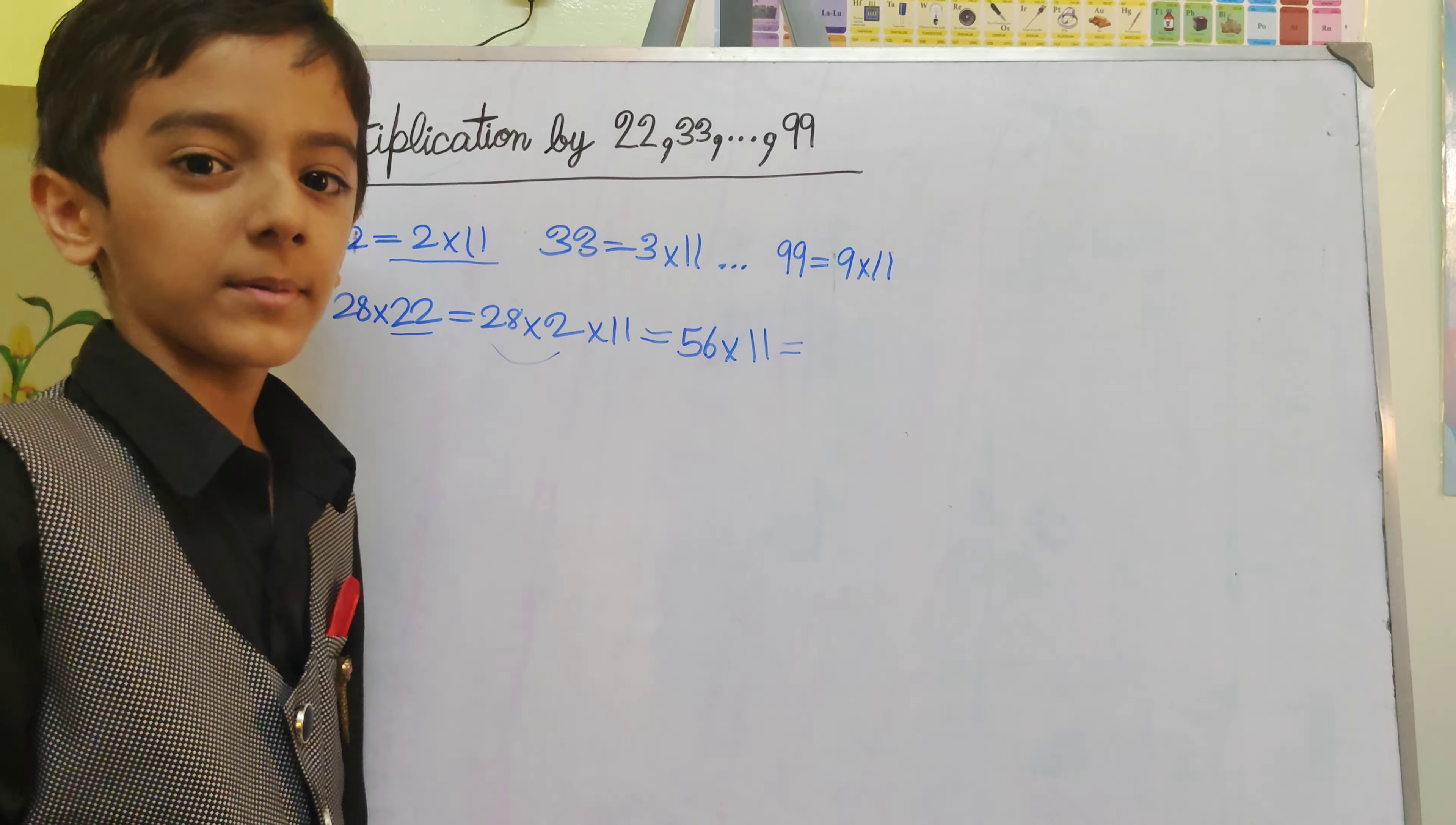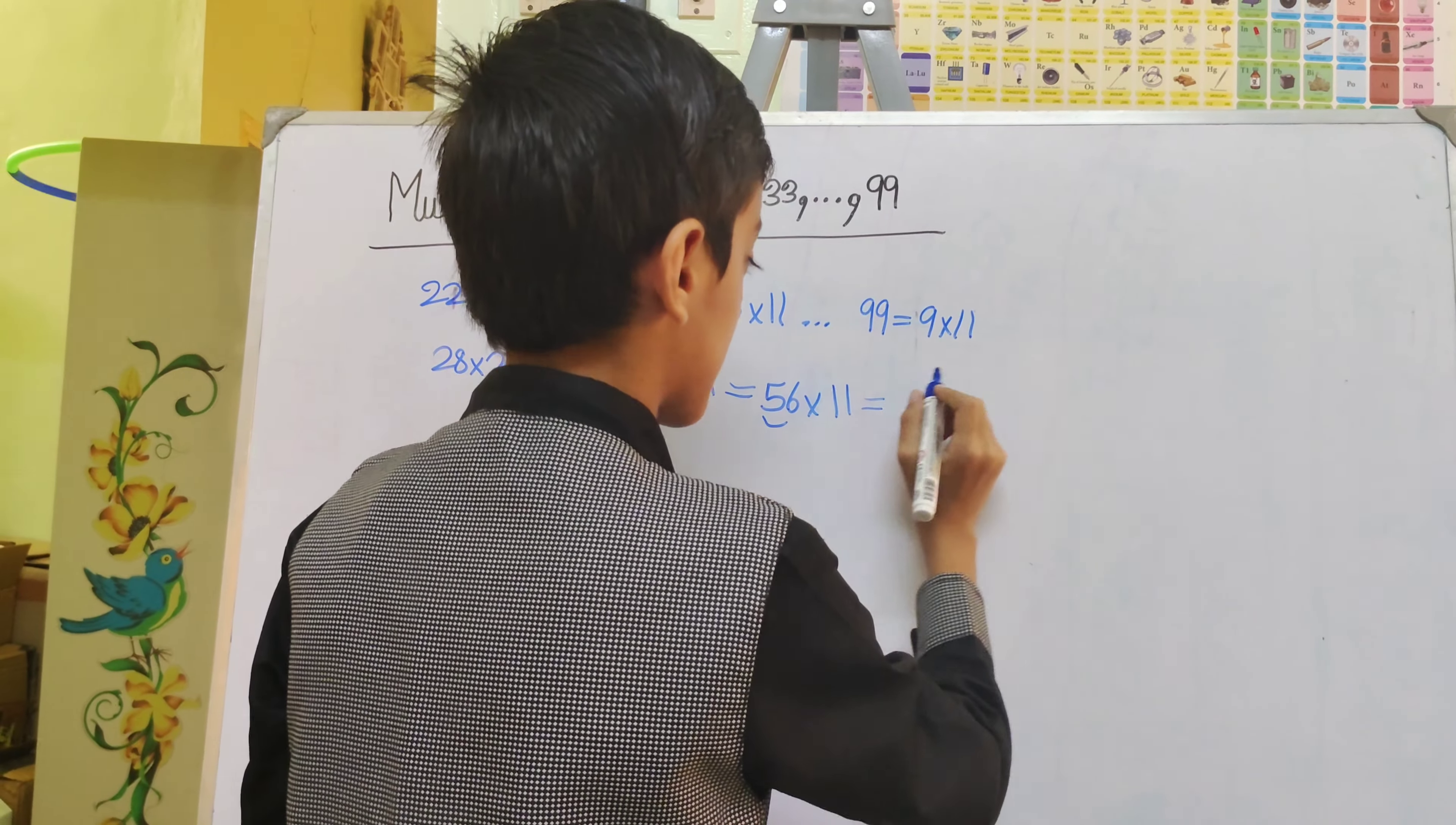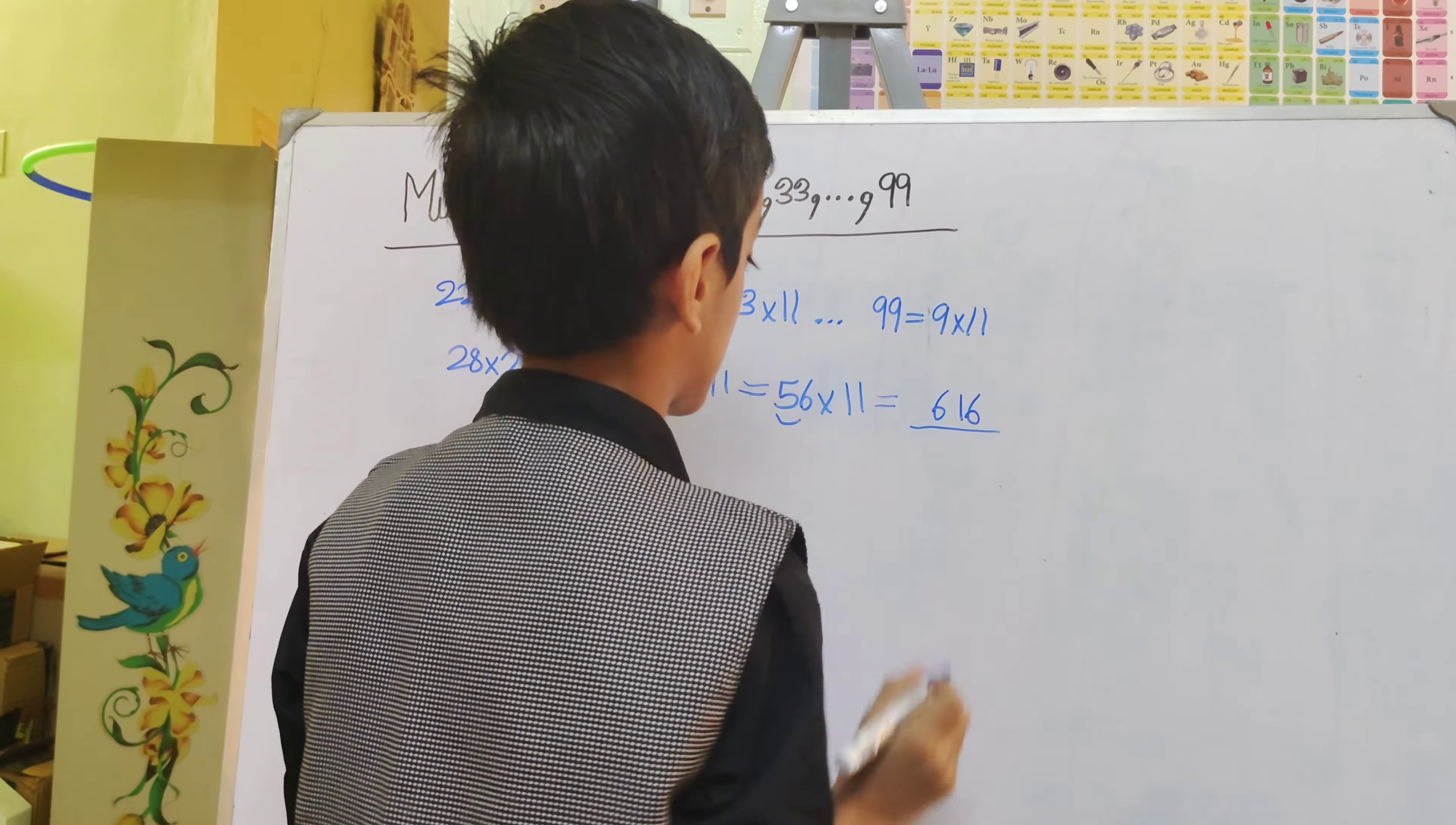The concept of multiplication by 11 is very easy. We should just add to the adjacent one. Keep your units digit as it is, 6. 5 plus 6 is 11, 1 carry over. 5 plus 1 is 6. So, 616 is your answer.